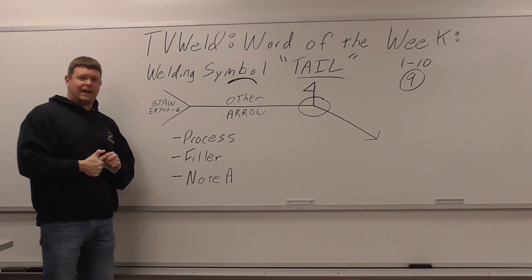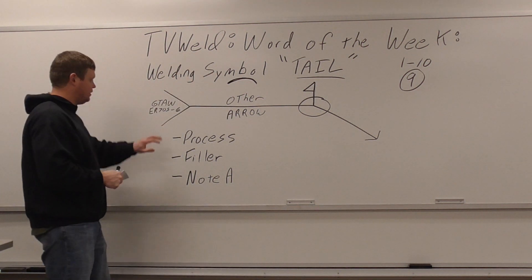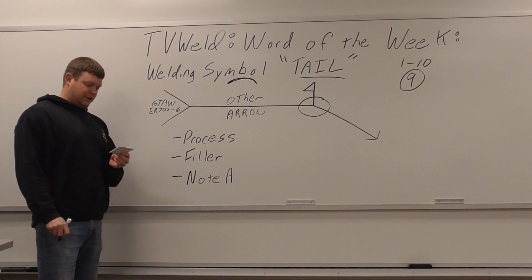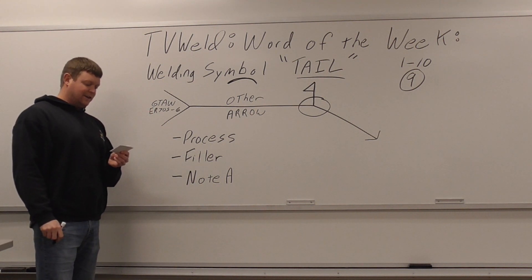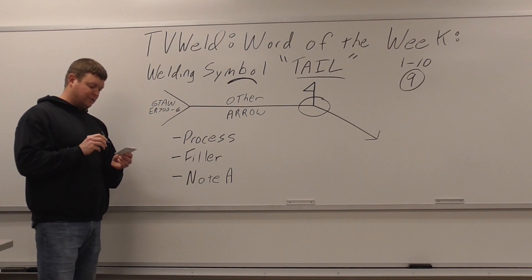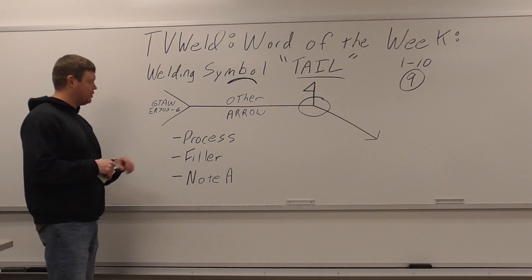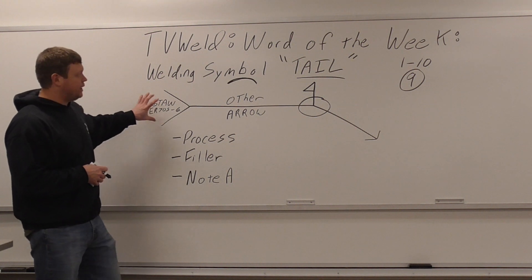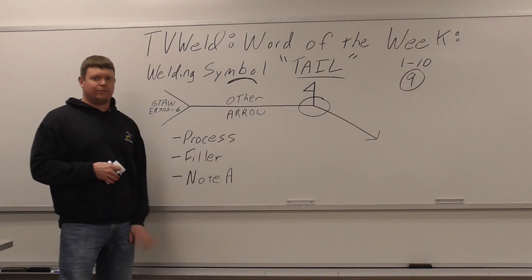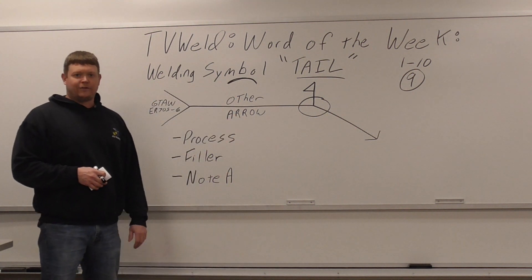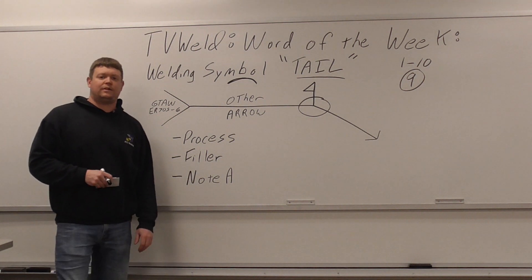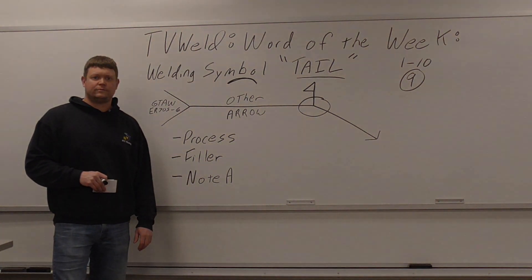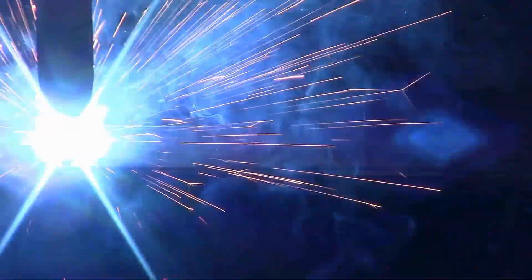So that's my summary of the tail. Basically these three things — process, filler, general references — and any information that aids in the making of the weld that does not have its own special place on the symbol. You can put general notes in the tail as long as it doesn't have a place on the welding symbol. Thanks for watching and subscribing to TV Weld, and we'll see you next time.